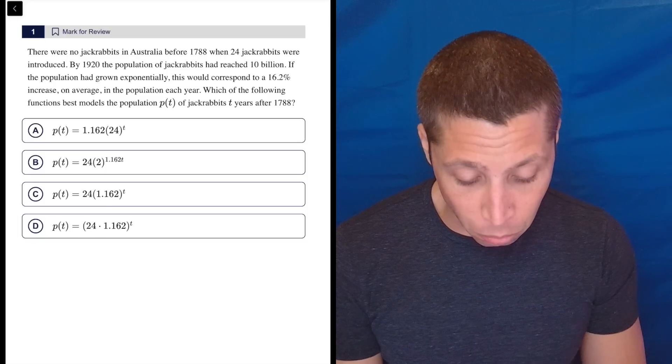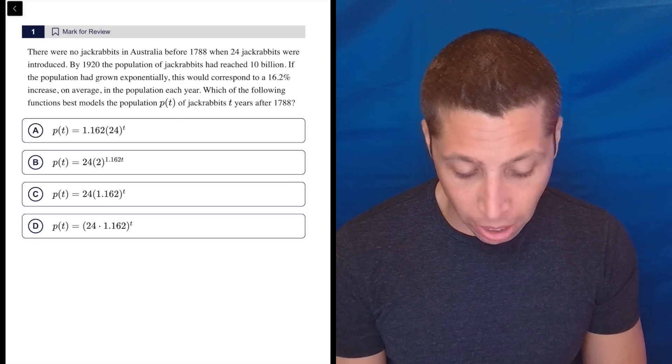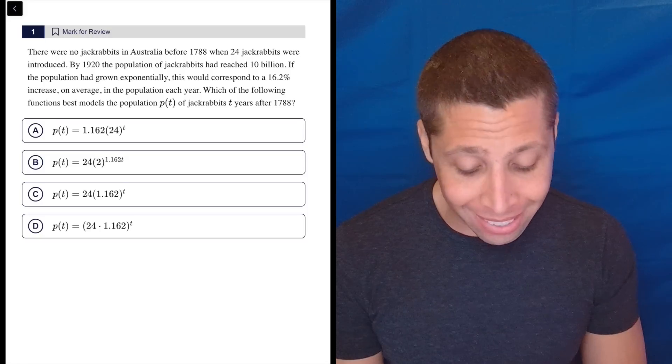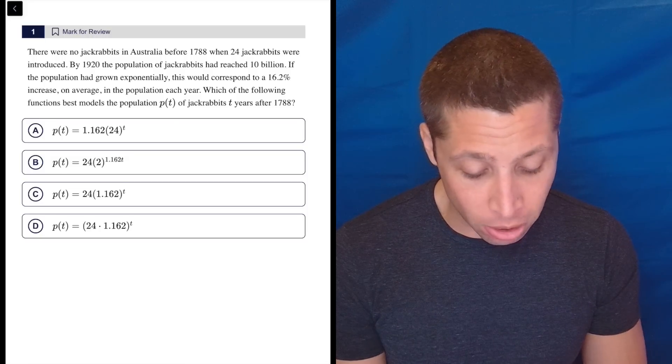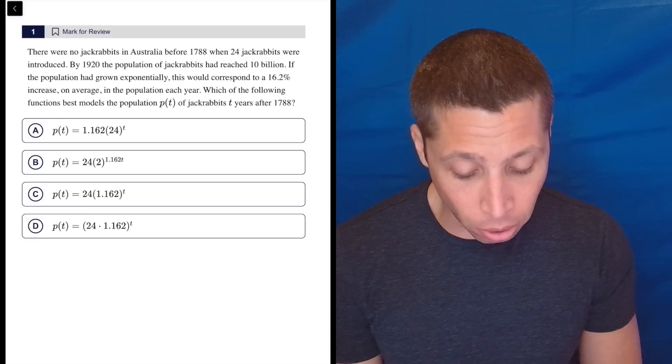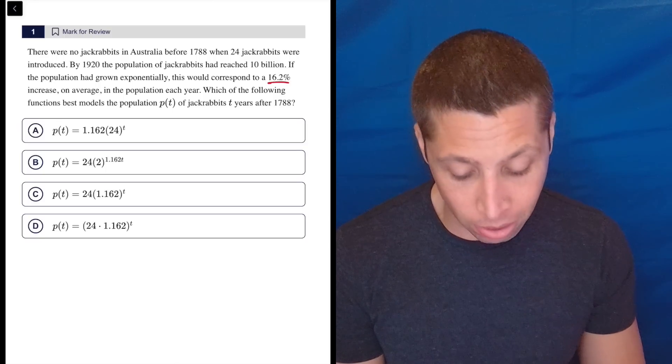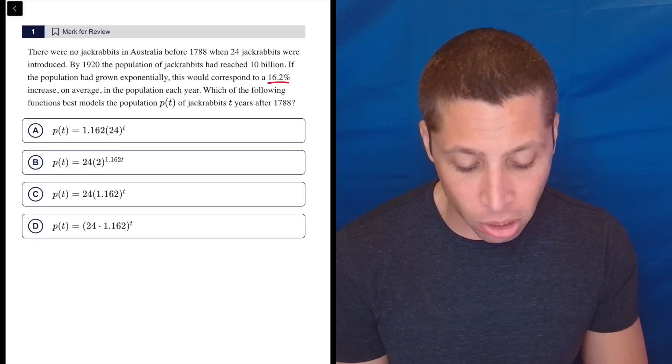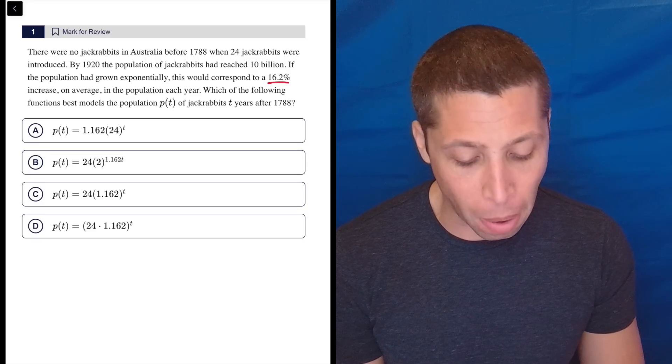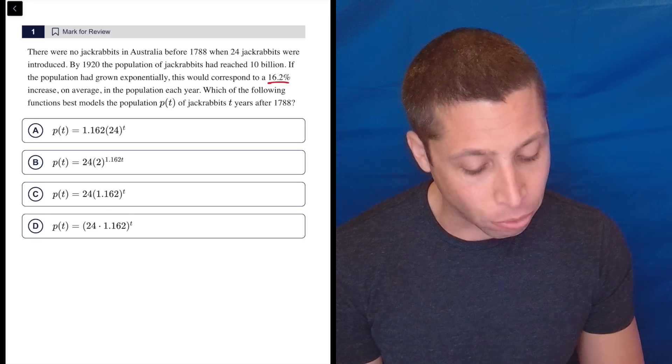There were no jackrabbits in Australia before 1788, when 24 jackrabbits were introduced. By 1920, the population of jackrabbits had reached 10 billion. If the population had grown exponentially, this would correspond to a 16.2% increase on average in the population each year. Which of the following functions best models the population of jackrabbits T years after 1788?